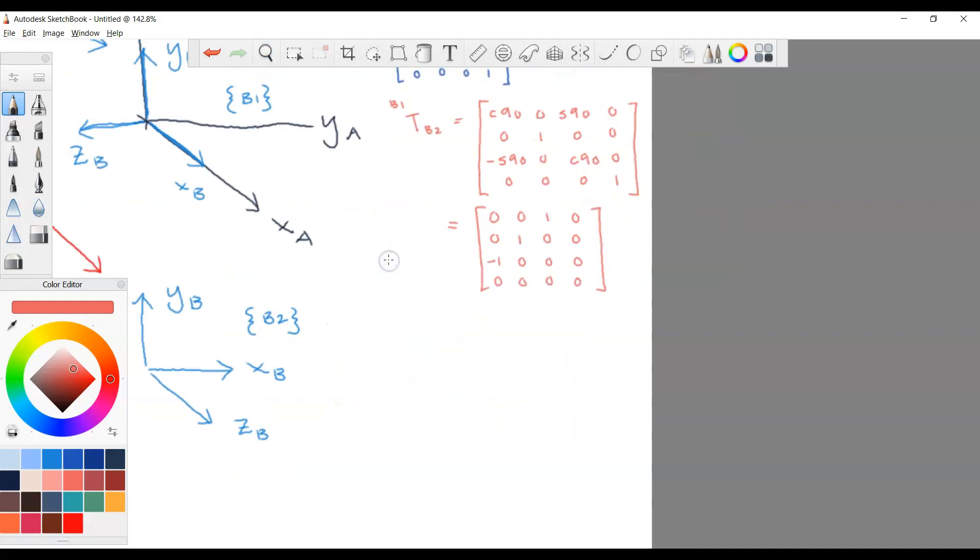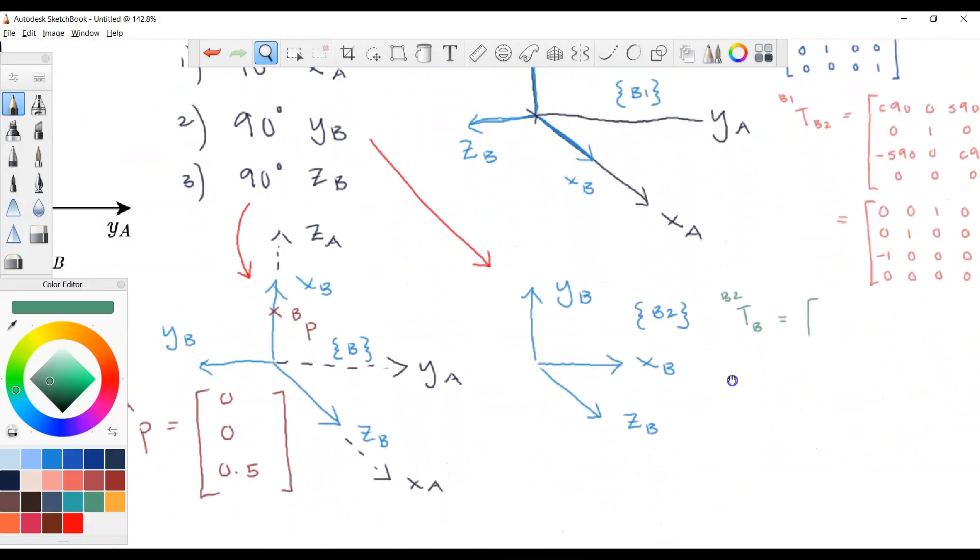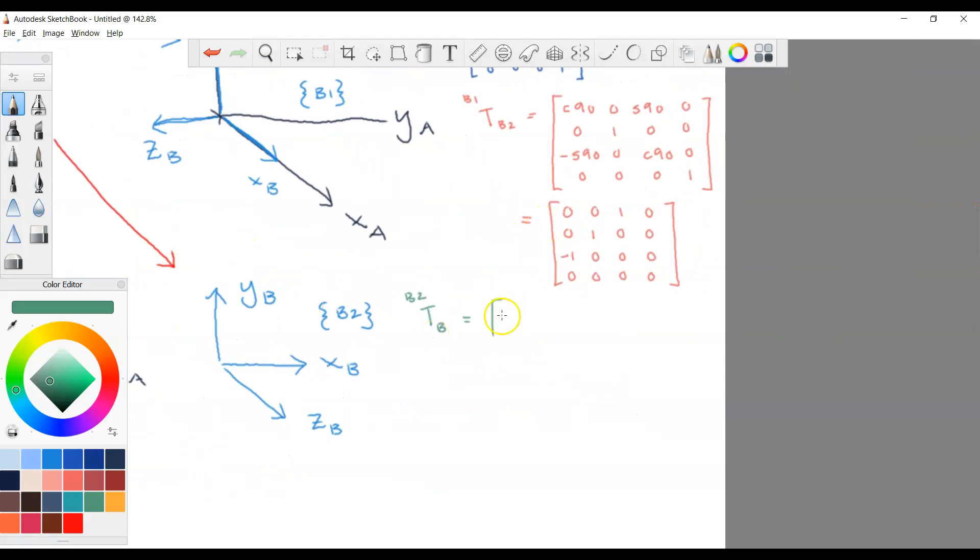Next, let's compute TBB2 which is the final rotation. What did we do? 90 degrees about ZB. So again remember TBB2 is the pose of this coordinate frame with respect to this. 90 in Z.